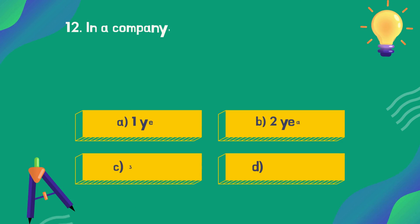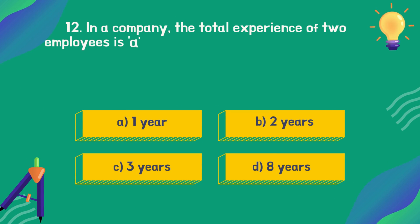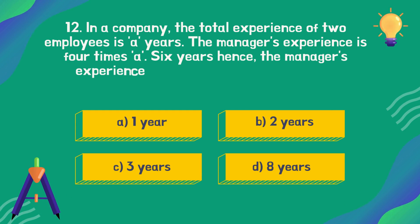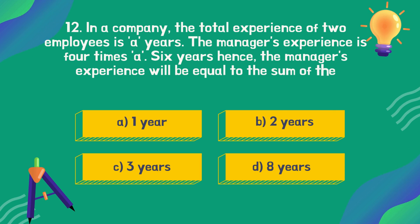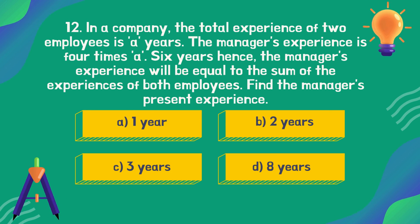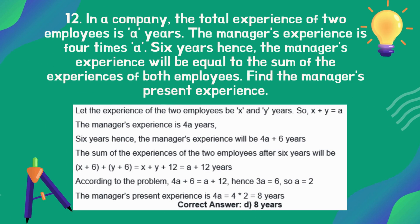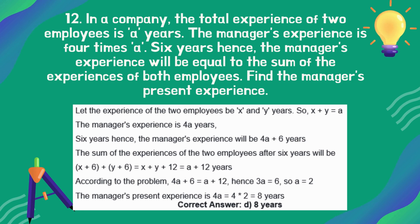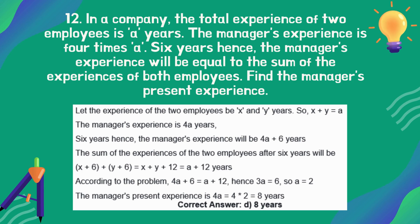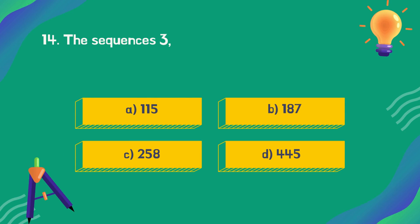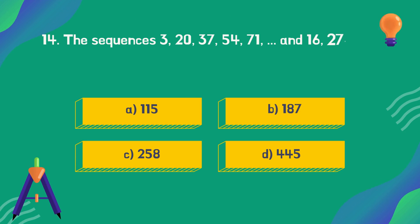In a company, the total experience of two employees is eight years. The manager's experience is four times a junior's. Six years hence, the manager's experience will equal the sum of both employees' experiences. Find the manager's present experience. The correct answer is option D: 8 years.